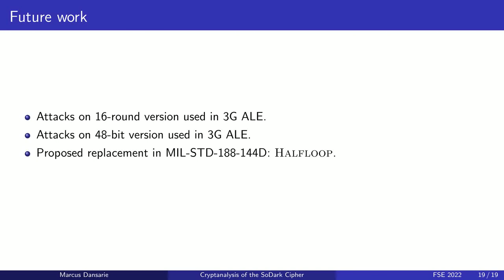For future work, attacks on the 16-round version of the cipher used in third generation ALE have not yet been developed, though the attacks presented here may be possible to extend to more rounds. In third generation ALE, a 48-bit version of the cipher is also introduced, with a slightly modified round function, and no cryptanalysis of that cipher appears to exist. In the latest version of the standard, a cipher developed for fourth generation ALE called a half-loop is also introduced; it is based in part on AES but has differences including different block sizes and a different key schedule compared to AES.